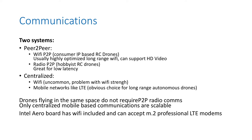The second type of topology is a centralized topology. You can try with Wi-Fi, since there is a Wi-Fi chip on Aero, but you can't go very far — it's great for ease of development but not meant for production over long distances. What most professional developers would do is plug an LTE modem on Intel Aero and take advantage of mobile networks. That way you have very long range — you can be in Australia and pilot your drone in France; it goes through the internet anyway, so there is no distance limitation. Drones flying in the same space do not require peer-to-peer radio communications to fly safely. Only a centralized mobile-based communication system is scalable and will allow all drones to share the sky.